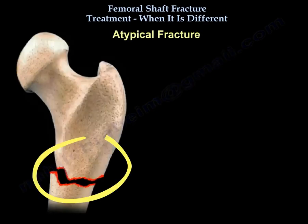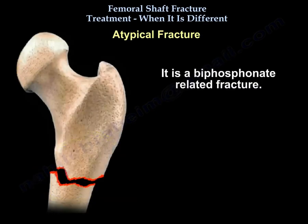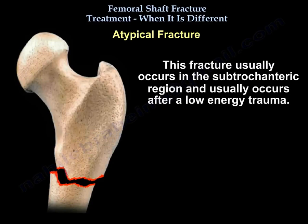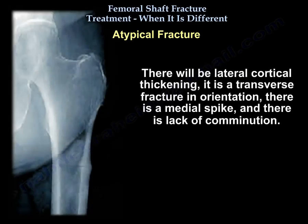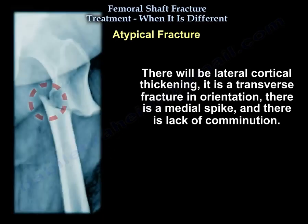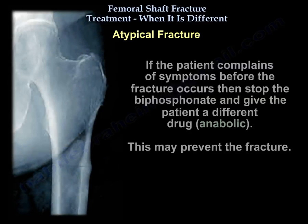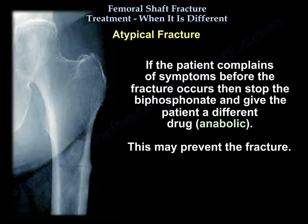Another fracture type is the atypical fracture, which is bisphosphonate-related. This fracture usually occurs in the subtrochanteric region, typically after low-energy trauma. There will be lateral cortical thickening, the fracture is transverse in orientation, there is a medial spike, and there is lack of comminution.